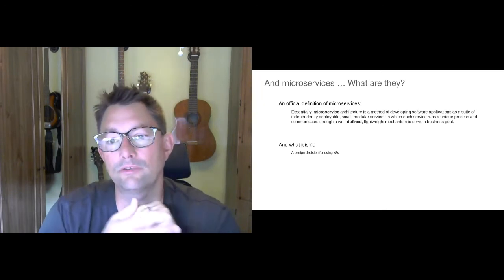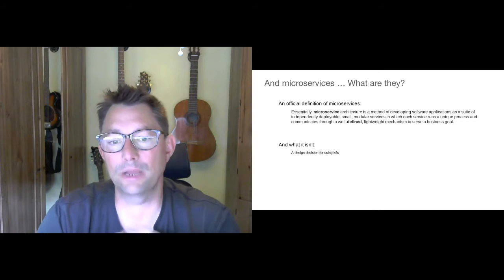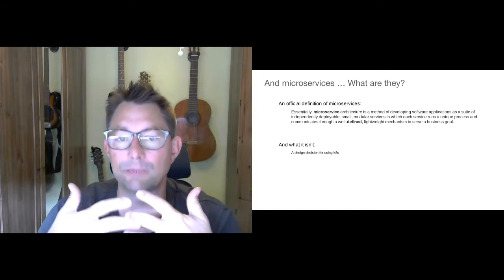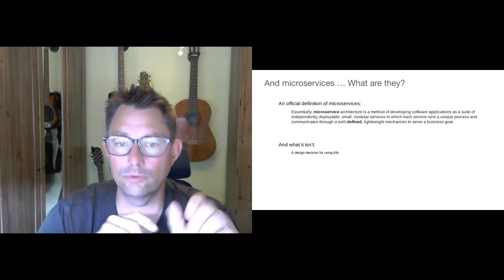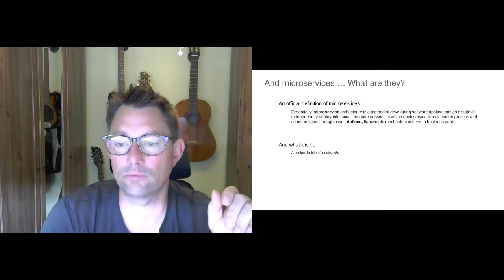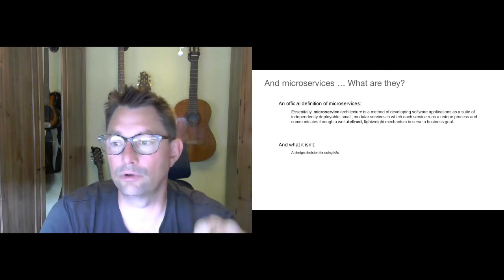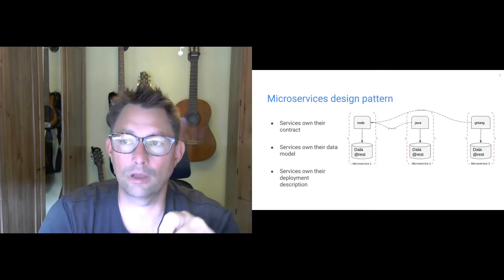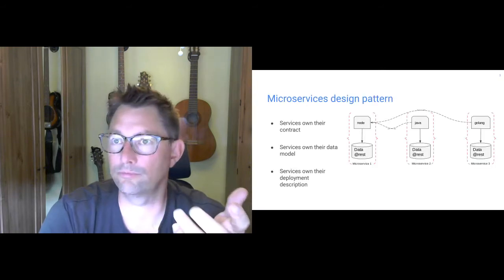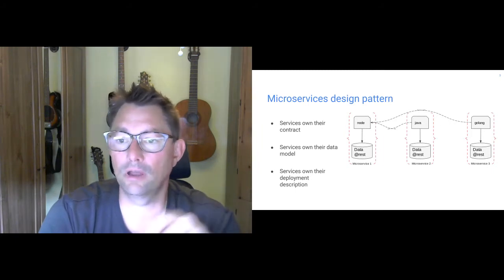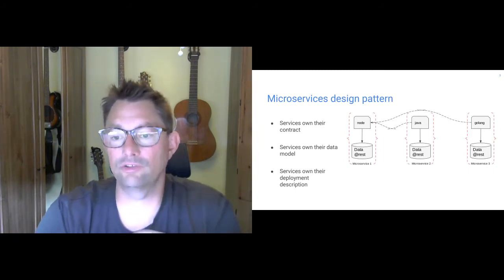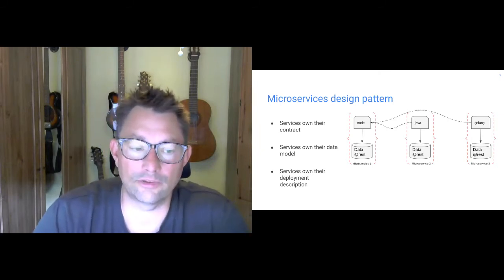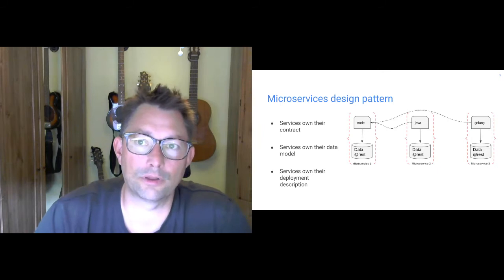Here's an example of what these patterns might look like. You might have a couple of different language nodes performing different types of functions — a Node.js node with its own data at rest, a Java node, and a Golang node. Each of these may communicate amongst each other to build more complicated use cases, but none of them are allowed to access each other's data. They always have to go through that well-known contract, and those services are part of their own deployment description.